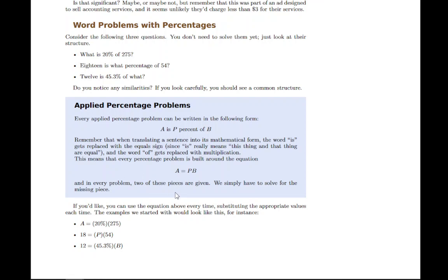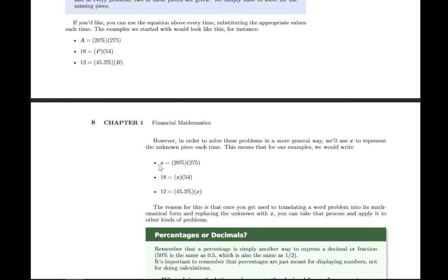So we just need to solve for the missing piece. And what I've done here is rewrite those word problems as mathematical equations. So now we can solve for each of these pieces by doing maybe one step of algebra and then doing a little bit of arithmetic. So, for example, in the first case, if we wanted to solve for the first number, we would just need to multiply 20% by 275. Now, to do that, we'll have to remember to convert 20% to a decimal and then multiply.